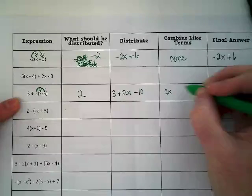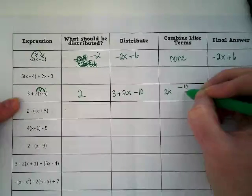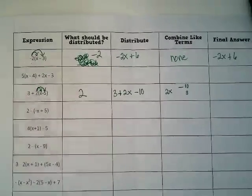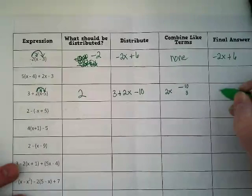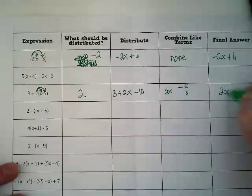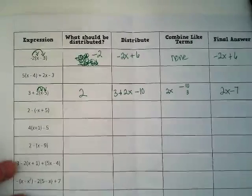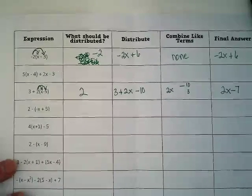I'm going to list my like terms. I've got 2x and then I have negative 10 and I have 3. What happens with my negative 10 and my 3? They become? I get 2x minus 7. Okay?